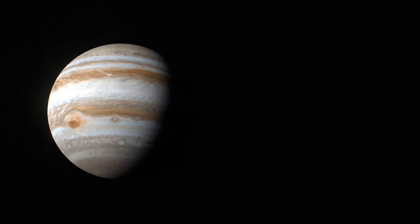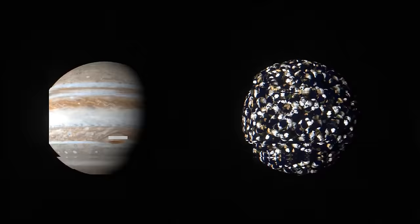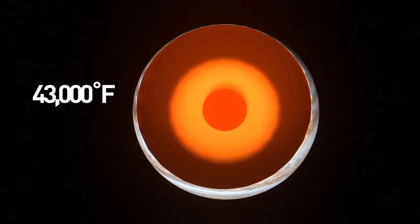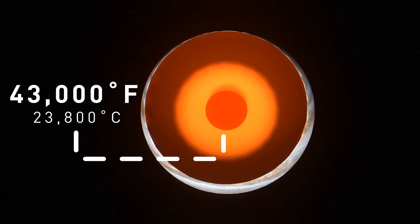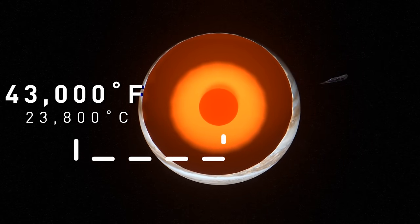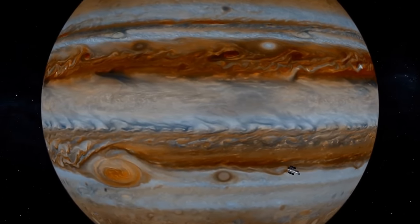The planet is huge. Almost 1,300 Earths could fit into this gas giant. It's also incredibly hot, with the temperatures reaching about 43,000 degrees Fahrenheit at the planet's core. Unfortunately, you can't land on Jupiter's surface because, well, being a gas giant, it doesn't have any solid surface.